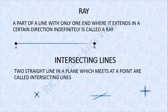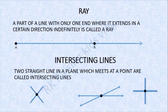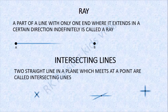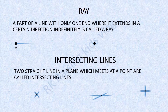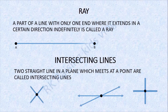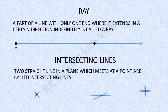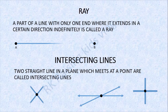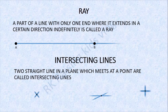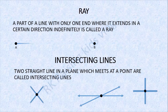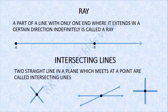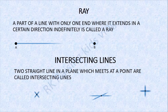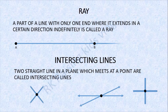Next: Intersecting lines. Two straight lines in a plane which meet at a point are called intersecting lines. Examples: the alphabet X, the plus sign, and so on.